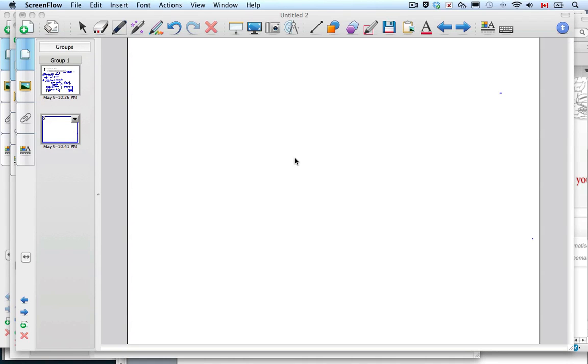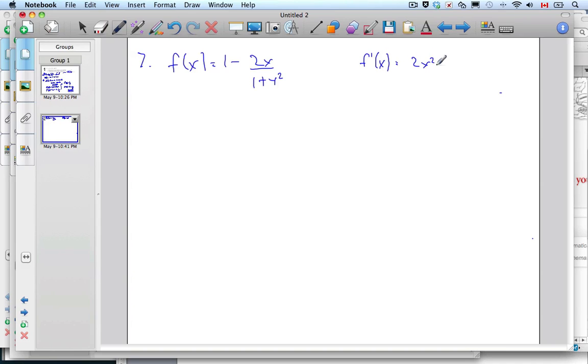Alright, here we have question 7 from the calc test. The question says you're given a function f(x) = (1 - 2x)/(1 + x²), and we're supposed to show that the derivative equals (2x² - 2)/(1 + x²)².